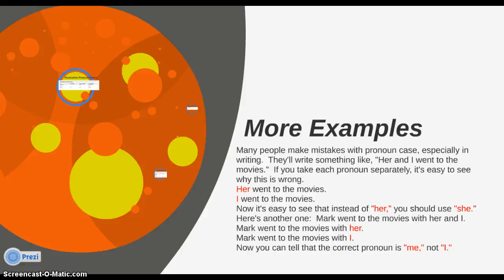Let's try another one: "Mark went to the movies with her and I." A lot of people say this and think it's correct, but let's break it down the same way. "Mark went to the movies with her" — that's fine. "Mark went to the movies with I" — that does not work. So we need to change I to another pronoun. The correct version is "Mark went to the movies with her and me," or we could say "Mark went to the movies with us" — that also works.